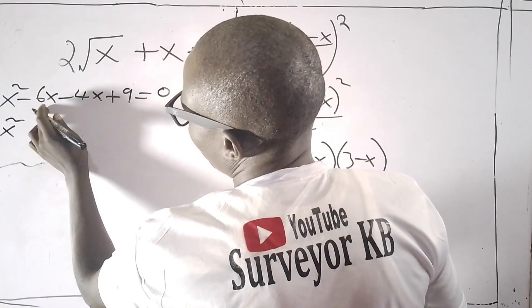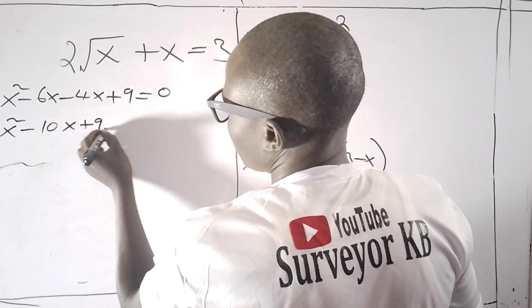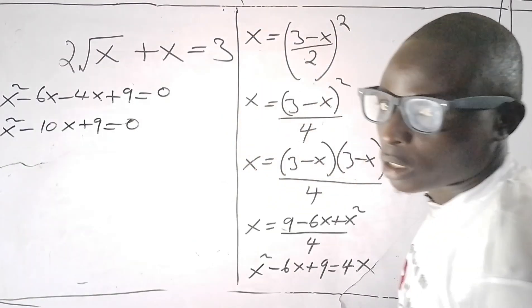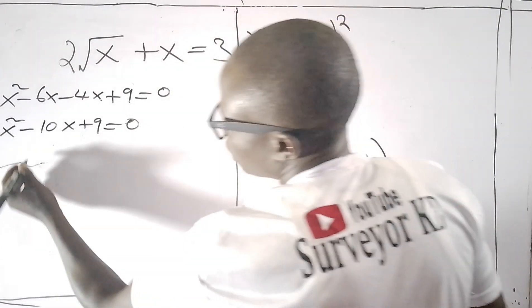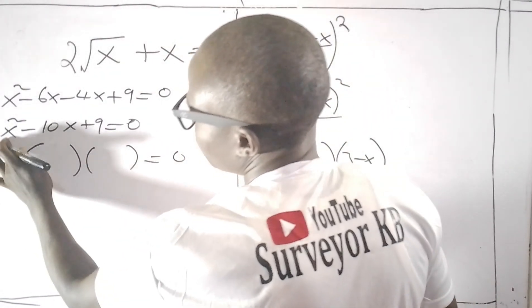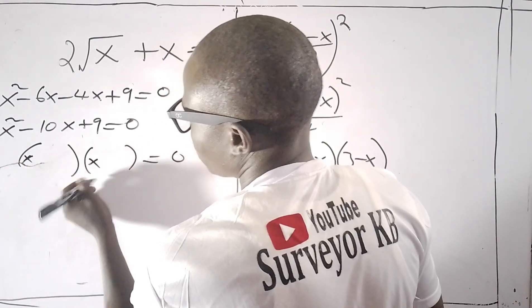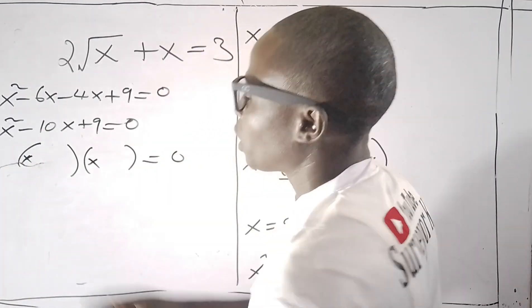So x² minus 10x plus 9 equals 0, and this is a quadratic equation. Let's see whether we can factorize the quadratic equation. Since the coefficient of x² is 1, I'll put x here and another x here.